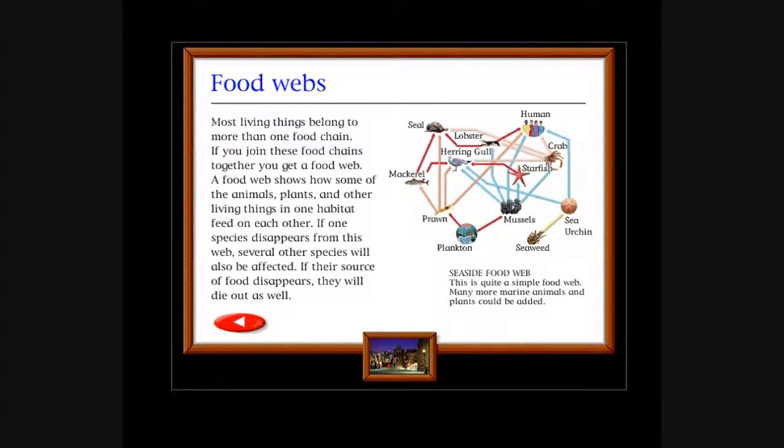Food webs: Most living things belong to more than one food chain. If you join these food chains together, you get a food web. A food web shows how some of the animals, plants, and other living things in one habitat feed on each other. If one species disappears from this web, several other species will also be affected. If their source of food disappears, they will die out as well. Seal, lobster, herring gull, mackerel, prawn, starfish, crab, mussels, plankton, seaweed, sea urchin. Seafood web: This is quite a simple food web. Many more marine animals and plants could be added. It does not look simple to me.